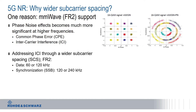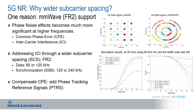The other part — the common phase error — we need to address by adding a so-called phase tracking reference signal. This is a specific sequence that has been designed by 3GPP. What you see on the right-hand side are simulations from the early stage of 5G NR standardization, showing different phase tracking reference signal sequences being utilized with different patterns — in other words, different mappings to the time-frequency grid.